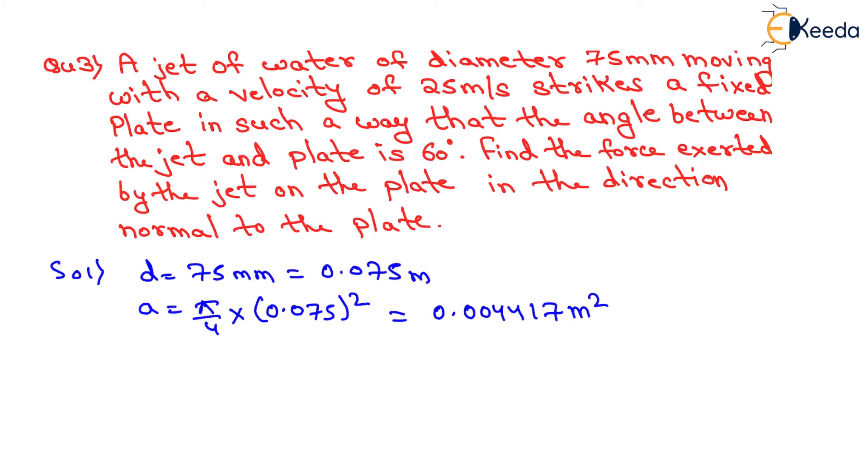Now velocity of jet is also given in this question, that is 25 meter per second. As well as angle between the jet and the plate is also given, that is theta equals to 60 degrees. Now the force exerted by the jet of water in the direction normal to the plate is given by this equation: Fn equals to rho A V square into sin theta.